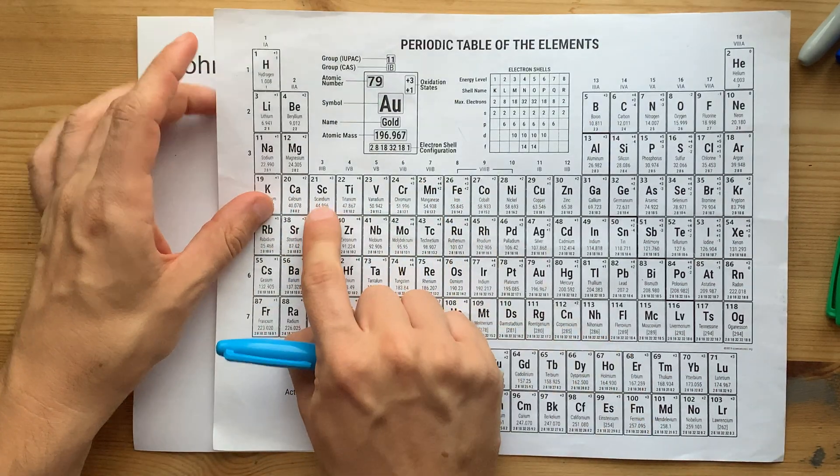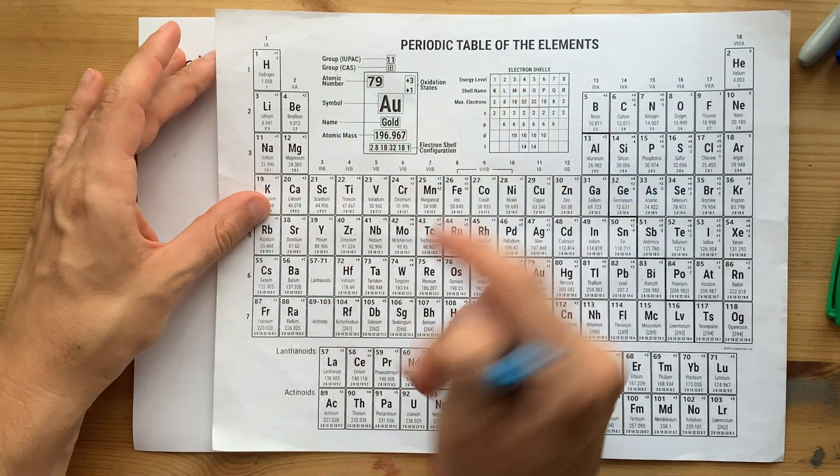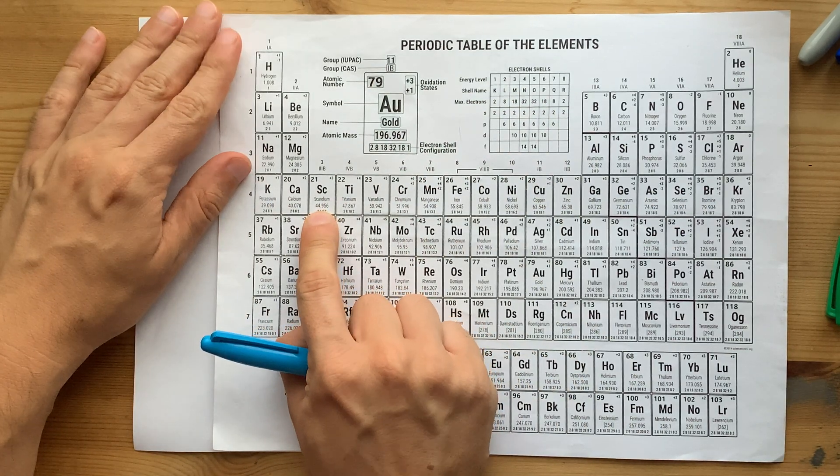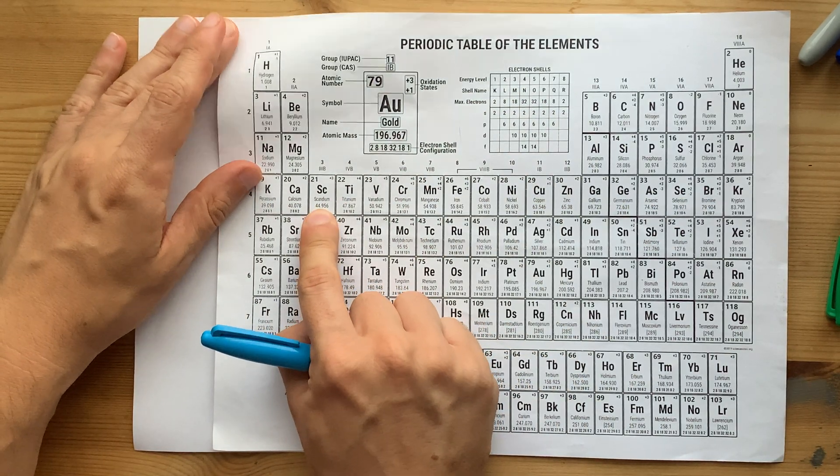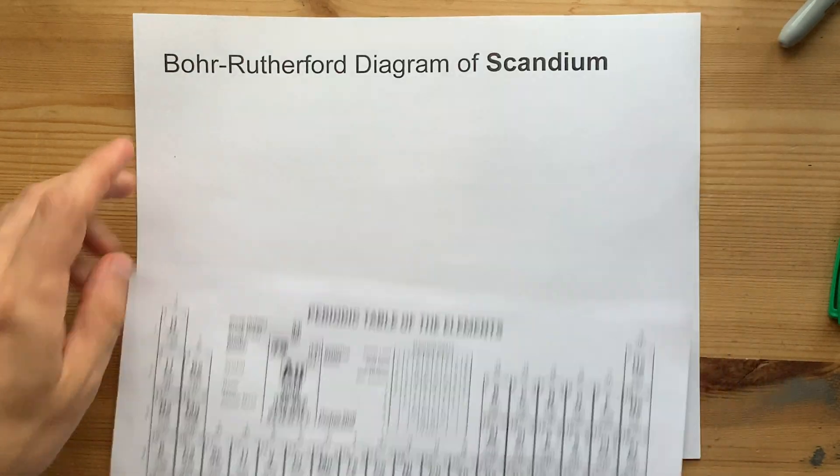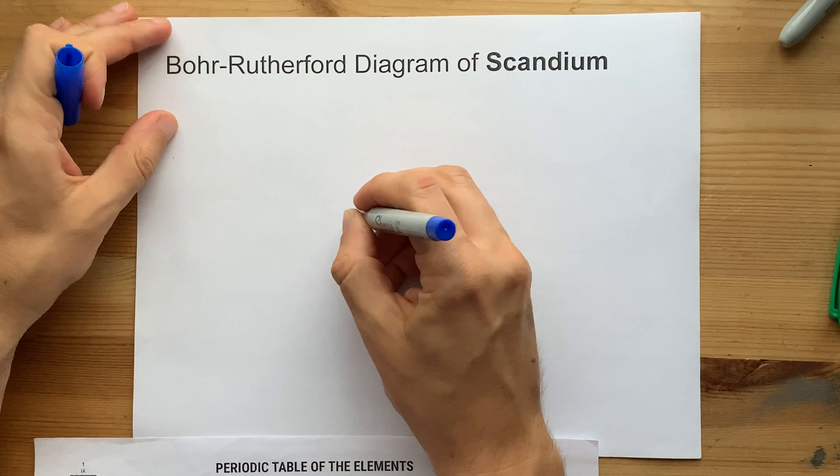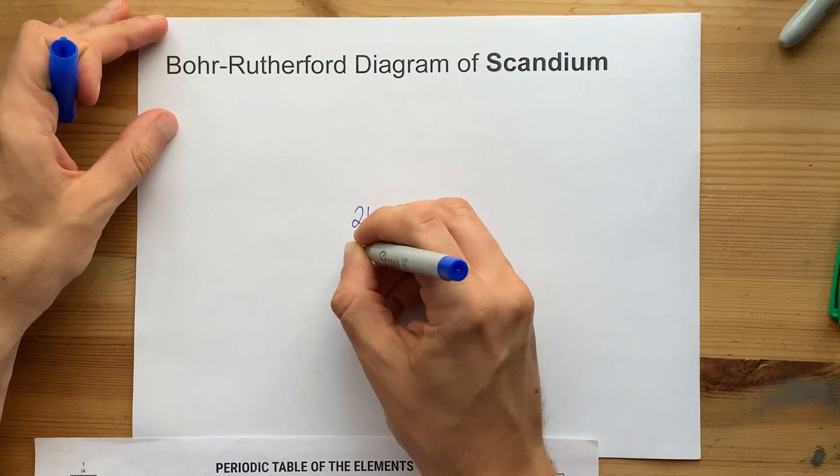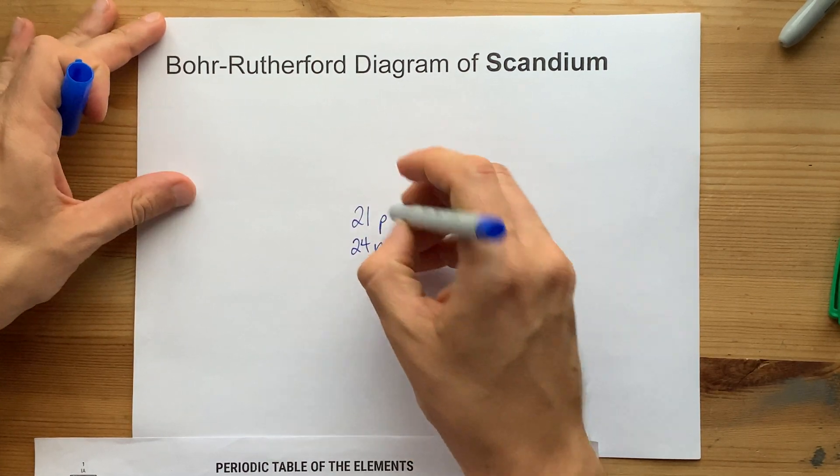So let's do it. We have 21 protons because it's atomic number 21. The atomic mass is about 45. 45 minus 21 is 24, so let's draw that nucleus of 21 protons and 24 neutrons.